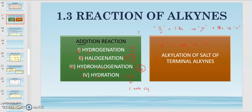Last but not least, you have alkylation of salt of terminal alkyne. This has been covered previously in the topic on preparation of alkyne. This reaction is considered a reaction of alkyne because your starting materials contain a triple bond. It is also considered a preparation because your products also consist of a triple bond. So alkylation can be both a preparation of alkyne and a reaction of alkyne.